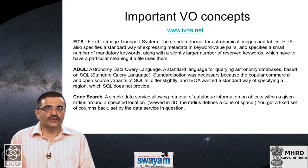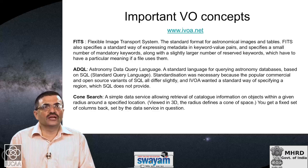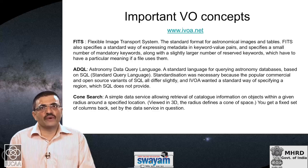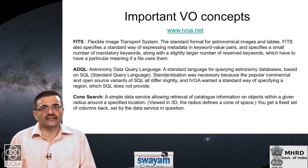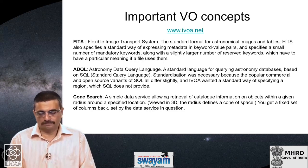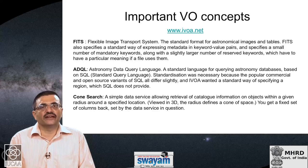The most basic thing one can do with a search is what is called a cone search. You specify a position on the sky with its right ascension and declination and ask the virtual observatory service to give you a list of all sources within a certain angular distance of that position — for example, within one degree. Viewed in 3D, this radius defines a cone of space, and a cone search returns a fixed set of columns set by the data service in question.